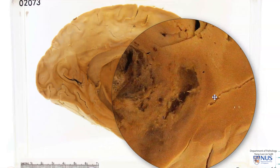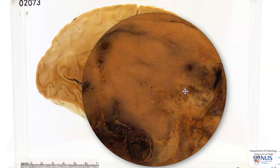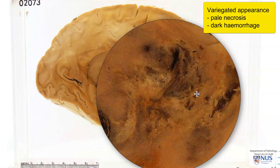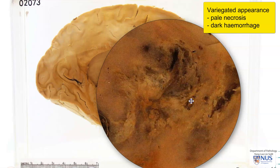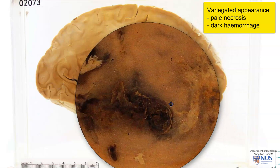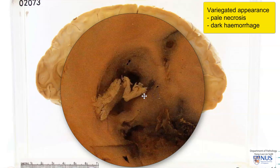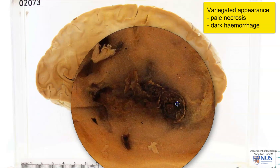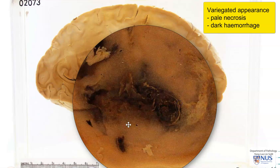It is ill-defined and tan in color. It is quite fleshy and variegated because we can see pale areas and also dark areas. This pale area actually represents necrotic tumor tissue, and this dark area represents hemorrhage.